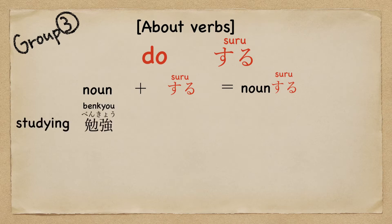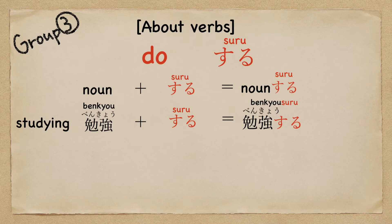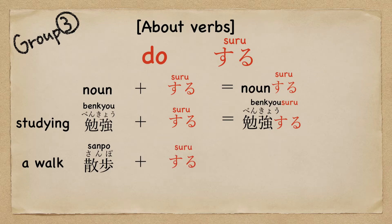For example, 'benkyou' is a noun. If you add suru, the noun 'benkyou' becomes the verb 'benkyou-suru'. Similarly, 'sanpo' is a noun. If you add suru, the noun 'sanpo' becomes the verb 'sanpo-suru'.